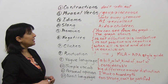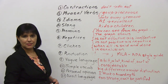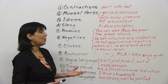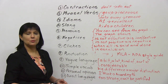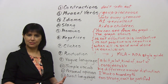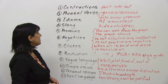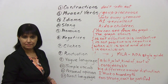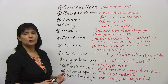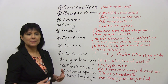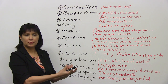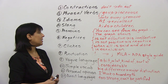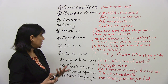Next, avoid idioms. Instead of saying 'it was A1,' say 'it was excellent.' Also avoid slang — don't say 'kids,' say 'children.' Use the proper terminology for various subjects.